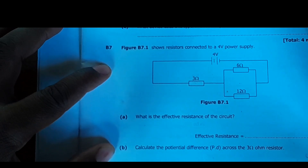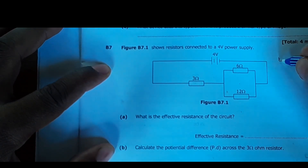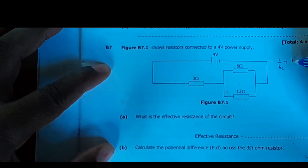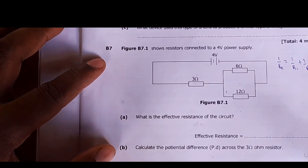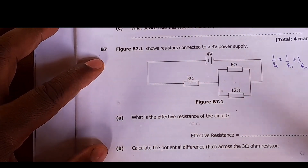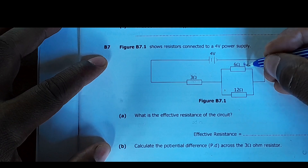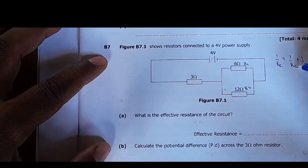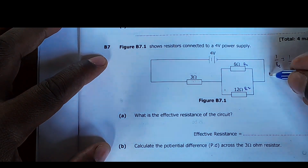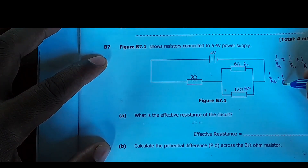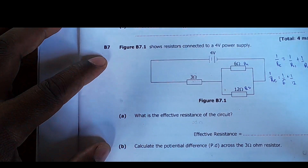For resistors that are in parallel, we find the total resistance using the formula: equivalent resistance is equal to 1/R₁ plus 1/R₂. We can name the first resistor R1 and the second R2. Plugging in those values, we say 1/R equals 1/6 plus 1/12.